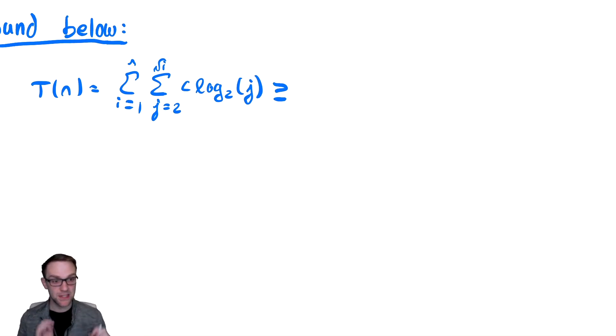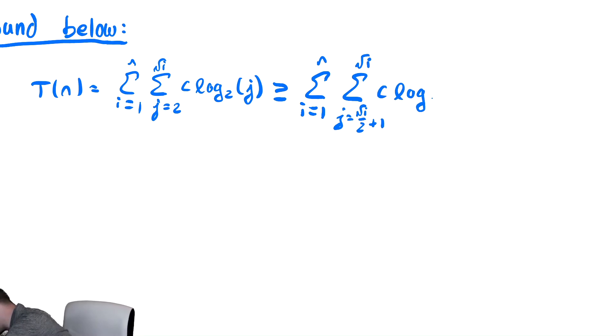So to bound below, just like we said in the previous problem, we can combine that step of splitting in half and keeping the larger half into a single step. So the outer summation, again, we do nothing with. I'll leave that as one to n. And the inner summation goes from radical i over two plus one to radical i of c log base two of j.